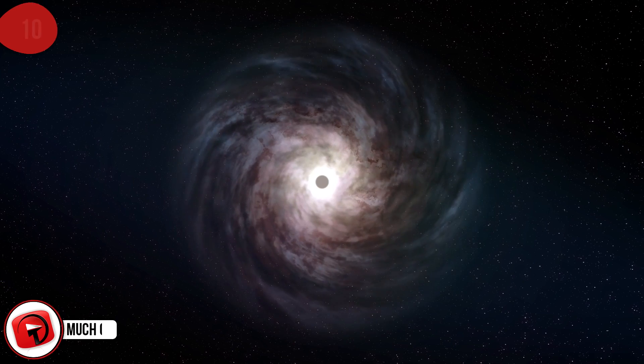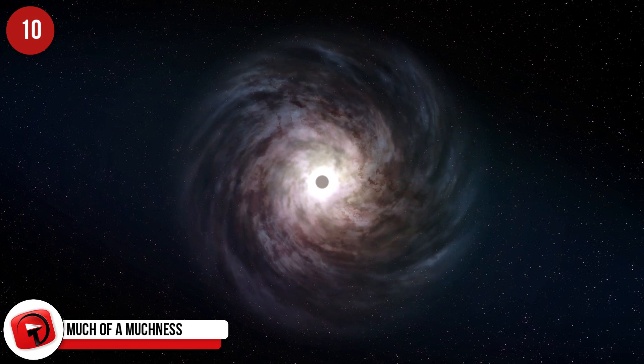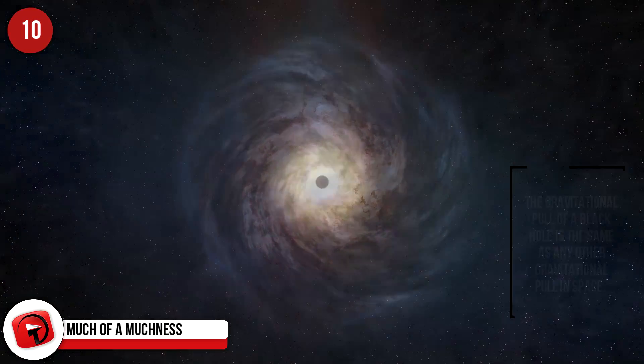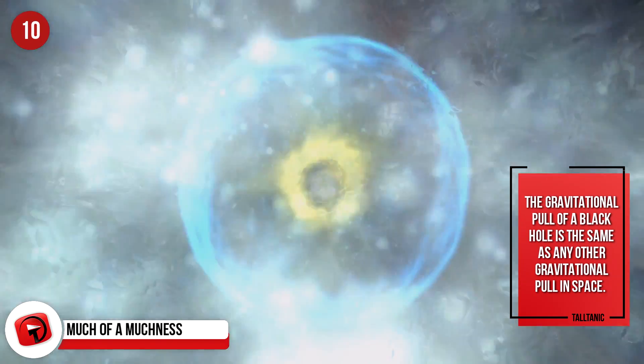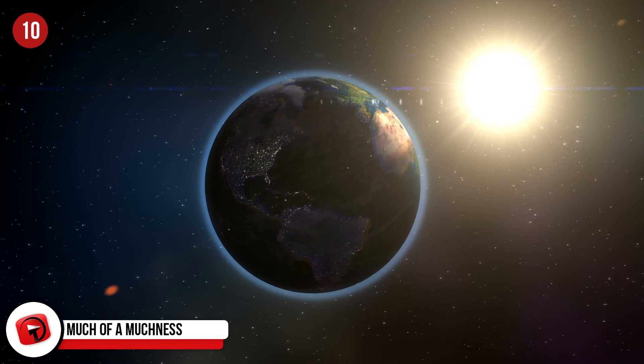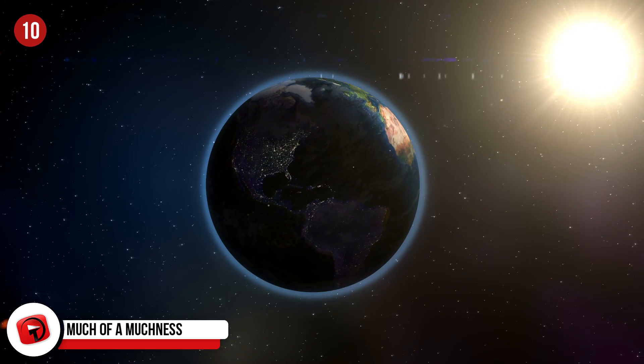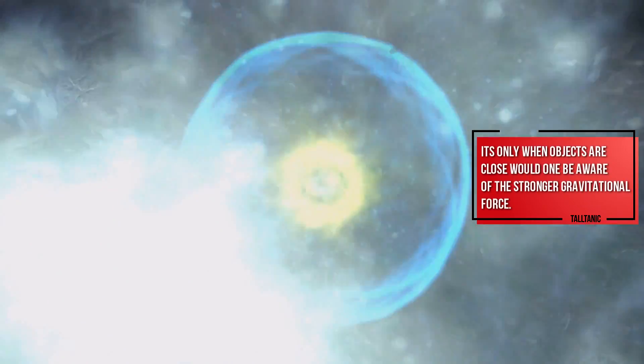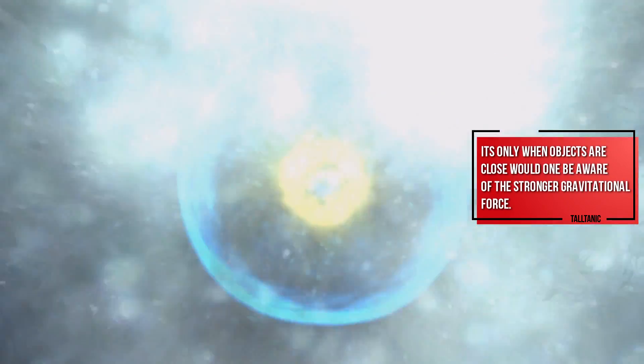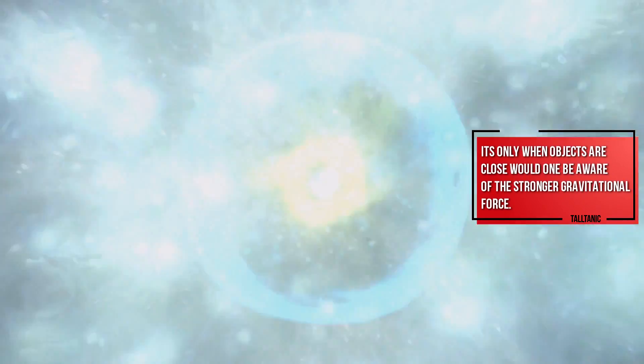Much of a muchness. Despite our reports on how the black hole is so great at sucking things in, the gravitational pull of a black hole is the same as any other gravitational pull in space. For example, if the Sun was a black hole of equal mass, then Earth would still experience the same gravitational pull as before. It doesn't change. It's only when objects are close, would one be aware of the stronger gravitational force.